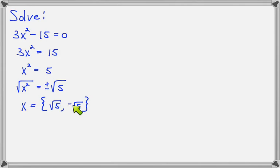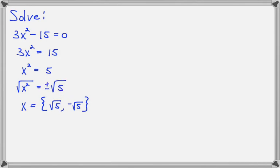I'm writing it out as two separate answers to underline that you really are getting two answers to your equation — the positive square root of 5 and the negative square root of 5. You will often see it written with the plus/minus notation, but writing them separately makes it clear there are two distinct solutions.